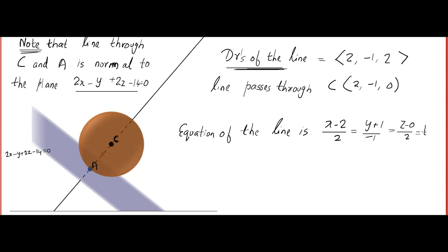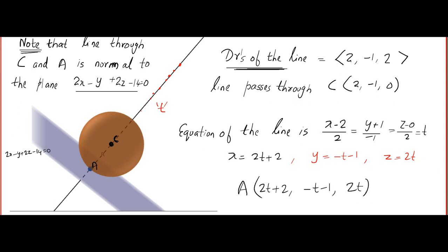Converting to parametric form gives access to every point on the line. For different values of t, you get different points. The parametric form is: x = 2t + 2, y = −t − 1, z = 2t. Point A — the point of contact — lies on the line, so it can be written as (2t + 2, −t − 1, 2t). Our job is to find the value of t.